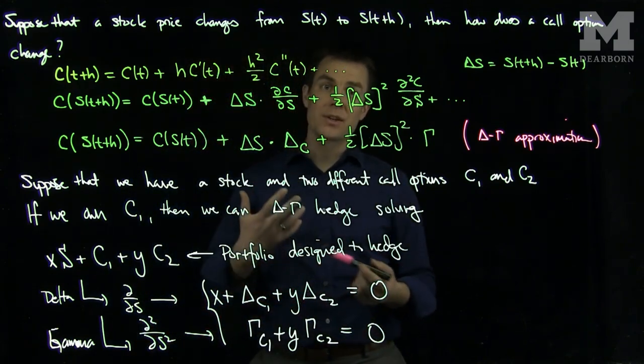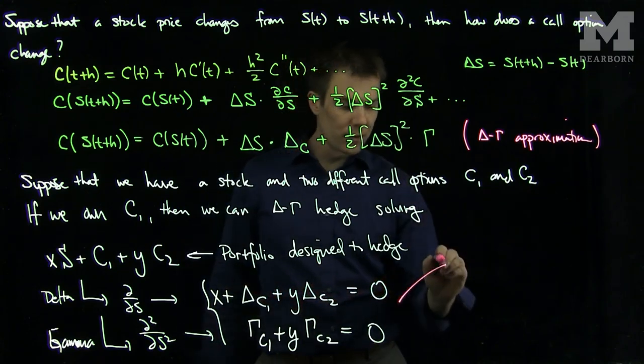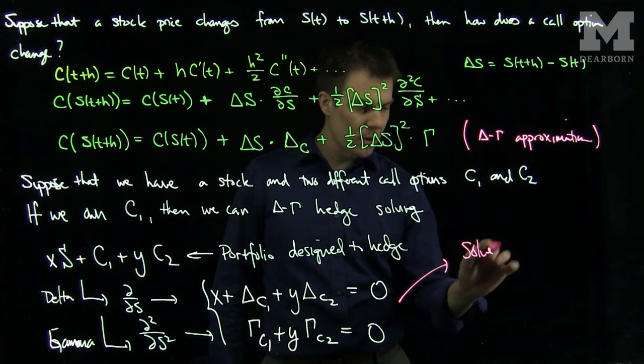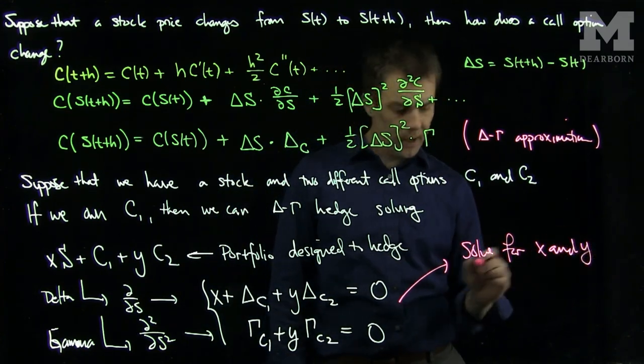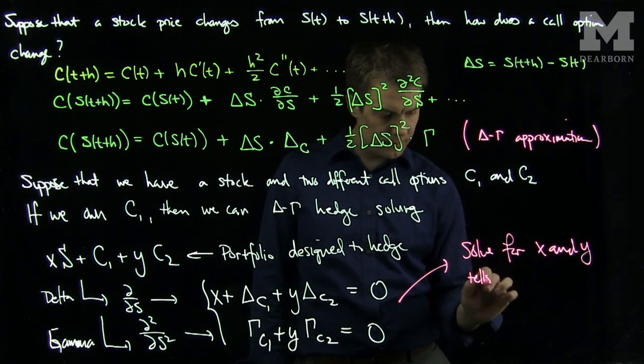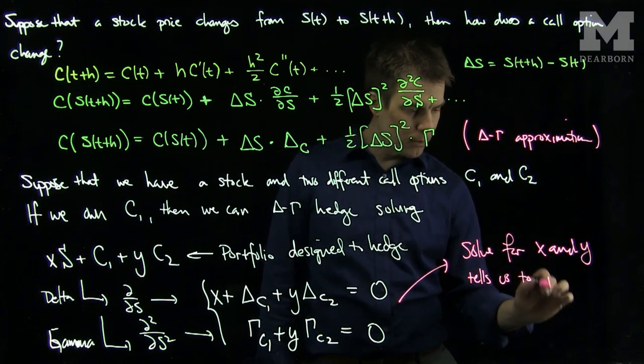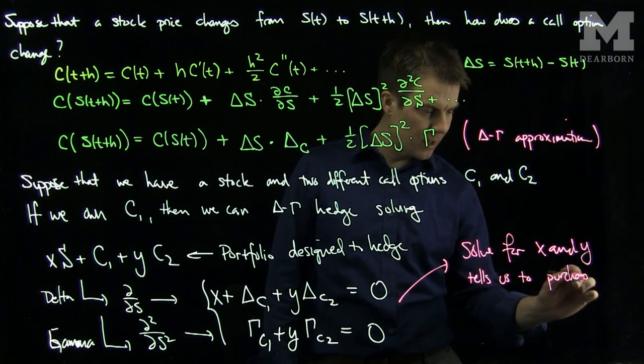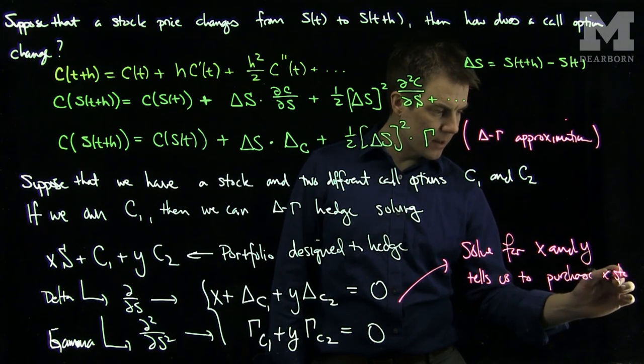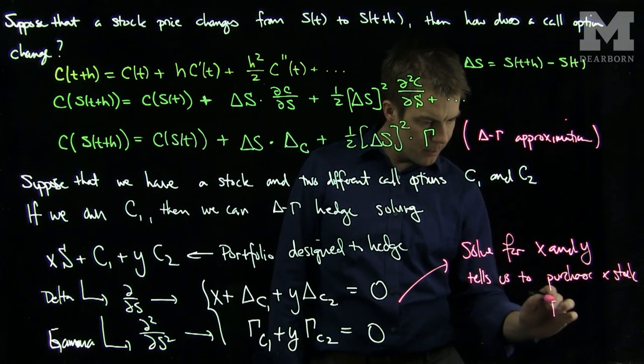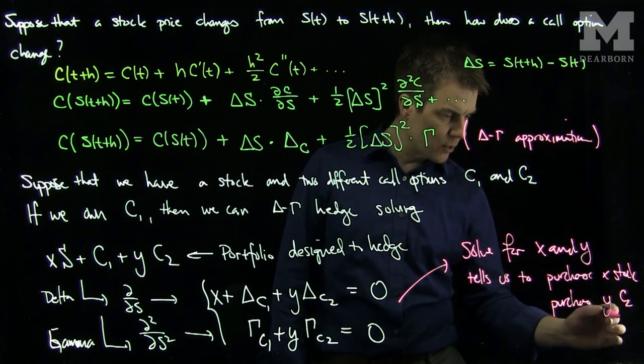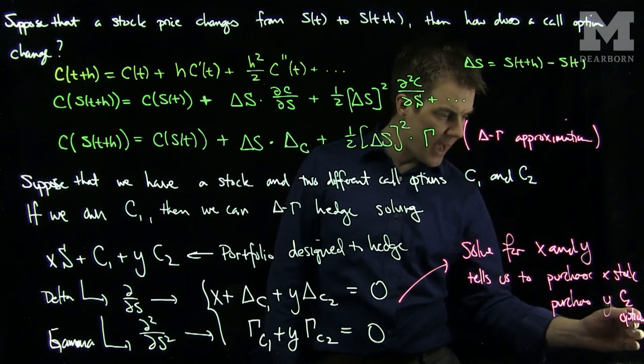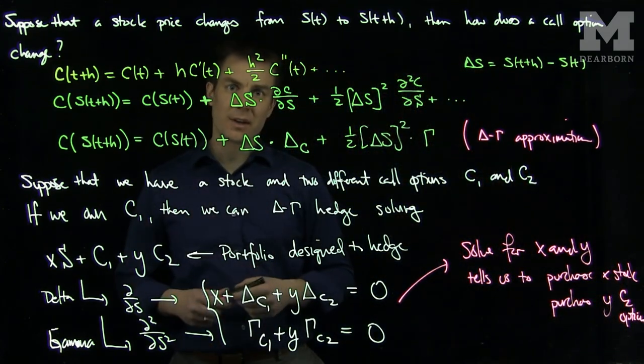assuming that we know the gammas and the deltas of these call options. So if we solve this equation for x and y, it will tell us to purchase or sell x of the stock and purchase or sell y of the C₂ option. And that is how you delta-gamma hedge.